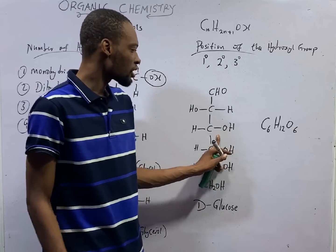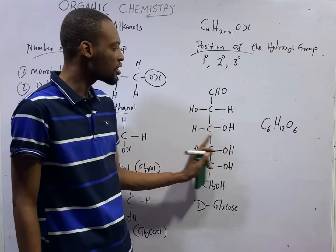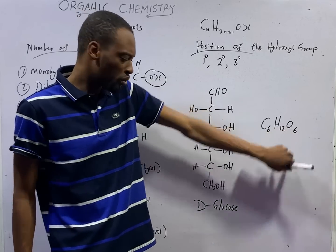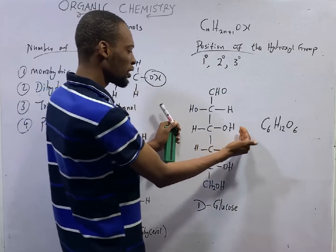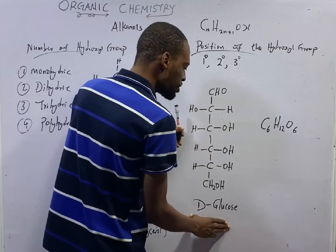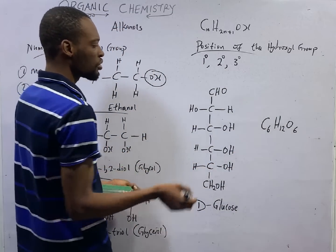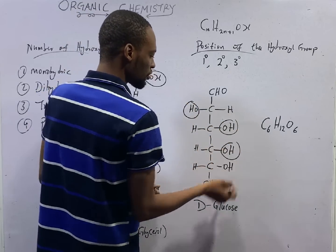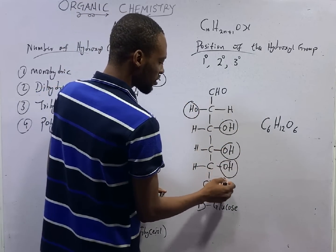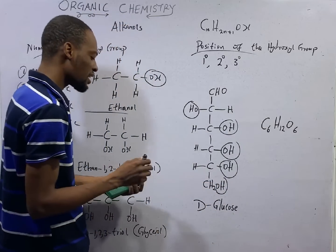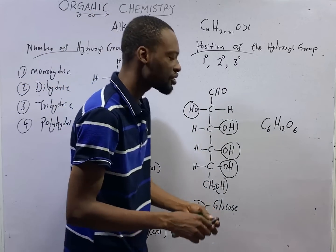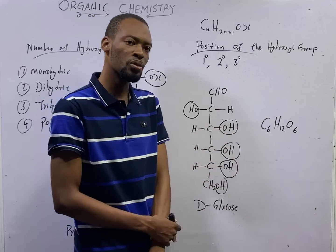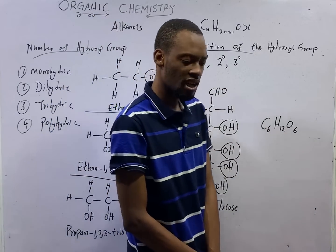Look at this — this is glucose, C₆H₁₂O₆. This is the molecular formula for glucose, and this is the structural formula — D-glucose. For D-glucose, you can see multiple OH groups here. Since it has more than three OH groups, this is a polyhydric alcohol. Glucose or D-glucose is a polyhydric alcohol.